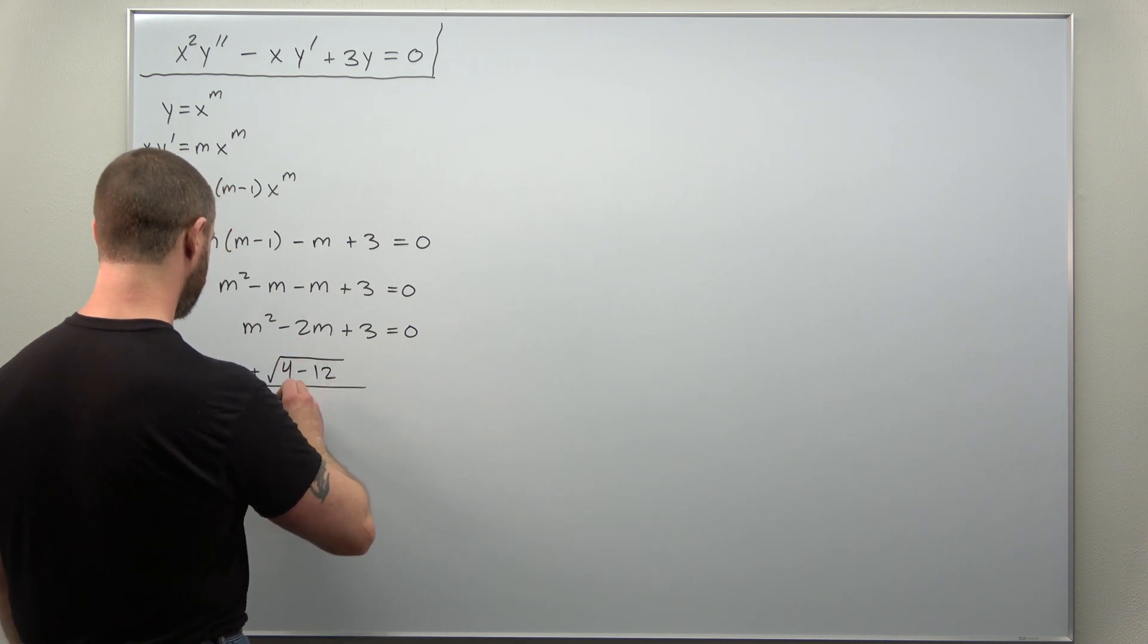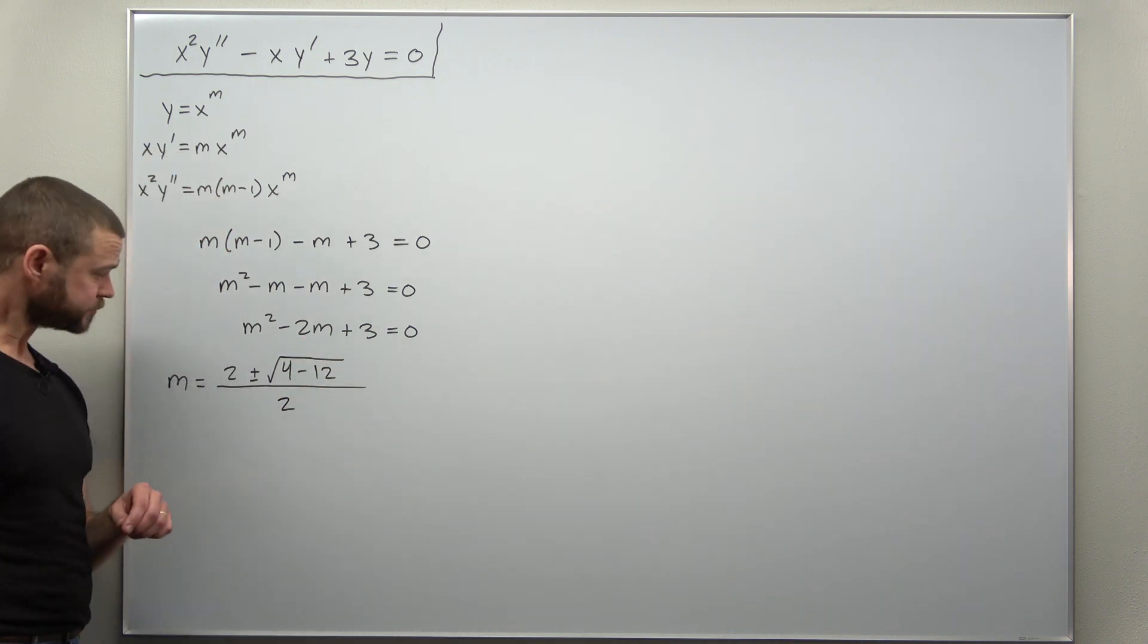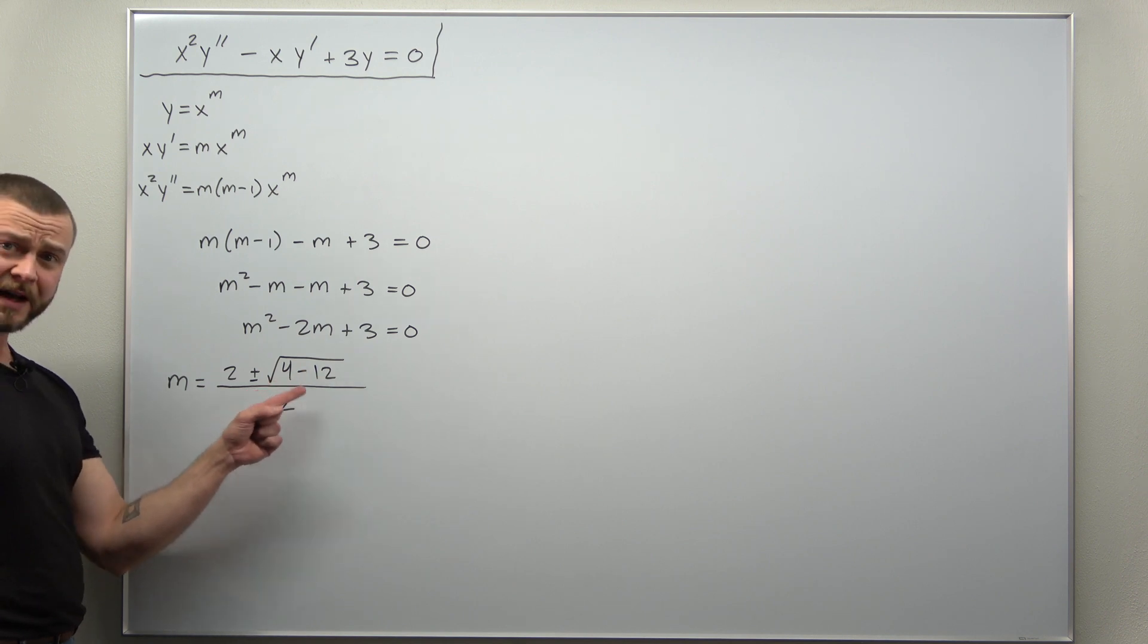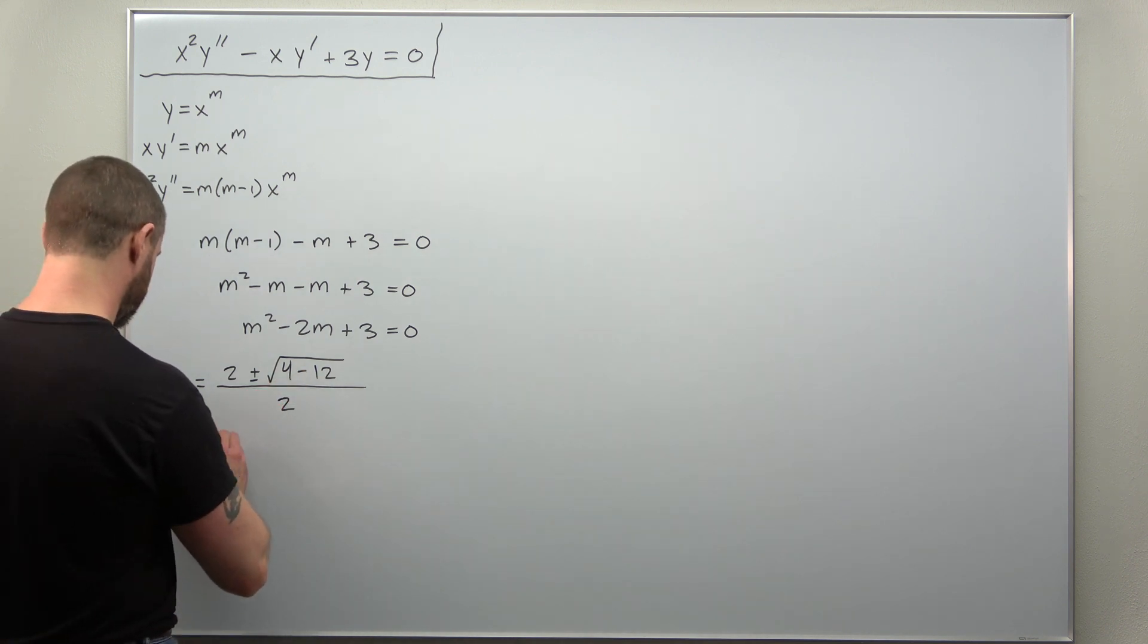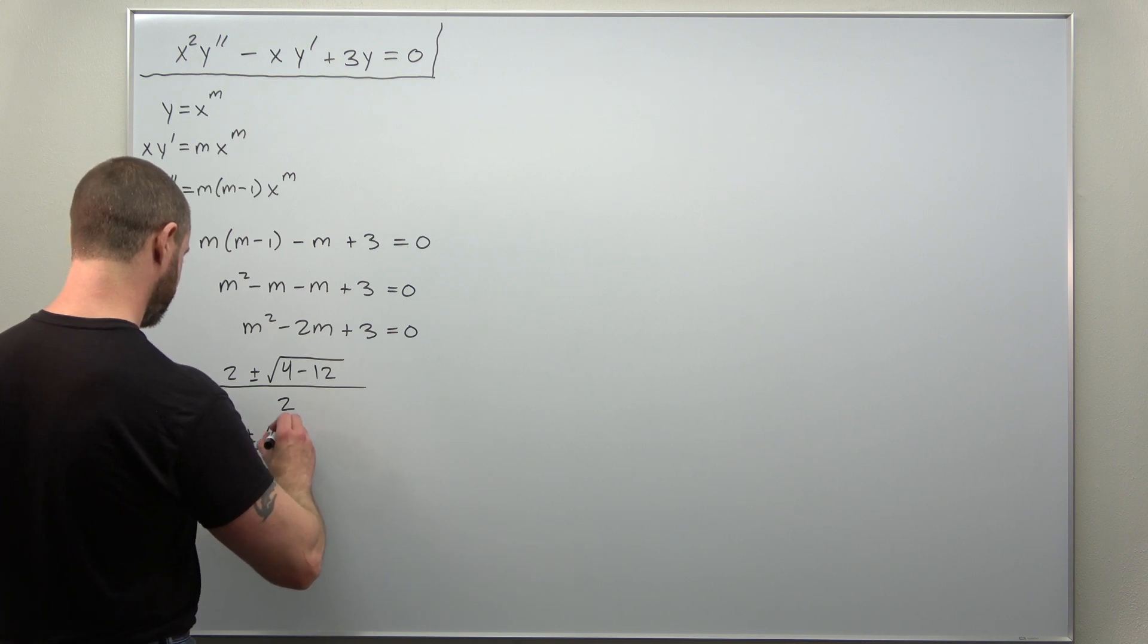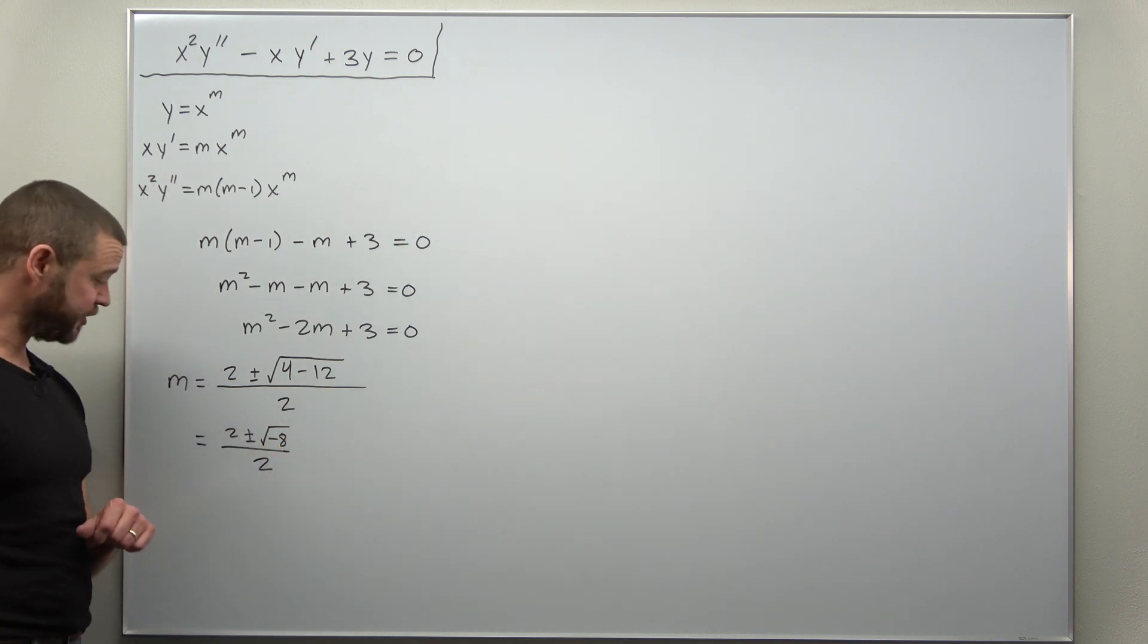So we get the square root of 4 minus 12, and that's all over 2a. Looks like we can simplify that inside there as 2 plus or minus the square root of negative 8 all over 2.